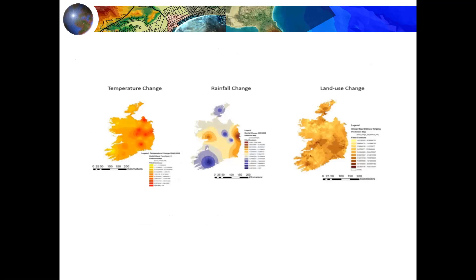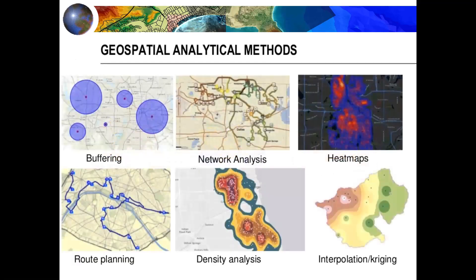Some example studies include temperature change, rainfall change, and land change analysis using geospatial analysis. Geospatial analysis methods can vary widely. According to your project and your needs, you will choose one or two — including buffering, network analysis, heat maps, interpolation, kriging, density analysis, and route planning.